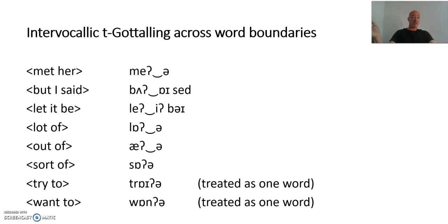Intervocalic glottaling in these words. They always come up: better, water, bottle, butter, letter, answer. However, it also occurs a lot across word boundaries. Matter. I would call this intervocalic glottaling here. But I said. Let it be. Two glottal stops even. Let it be. Lot of. Out of. Very prominent in Cockney English. This or that. And even here, try to. I try to go there. I want to go there. So yes, intervocalic T or after N.